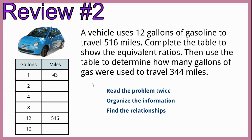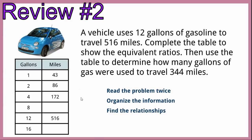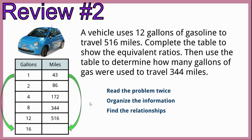So from 1 to 43, we multiply both by 2 to get 2 to 86. Then from 1 to 43, we multiply both by 4: 1 times 4 is 4, and 43 times 4 is 172. Going back to the unit rate, 1 times 8 is 8, and 43 times 8 is 344. Then for the last entry, 1 times 16 is 16, and 43 times 16 is 688.